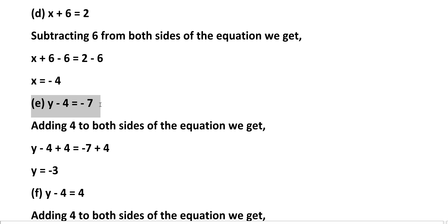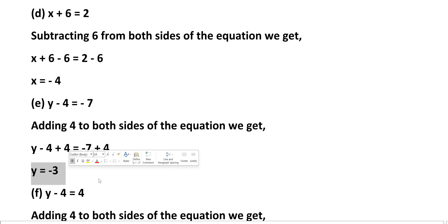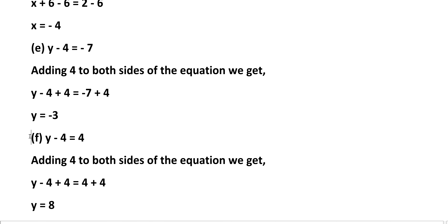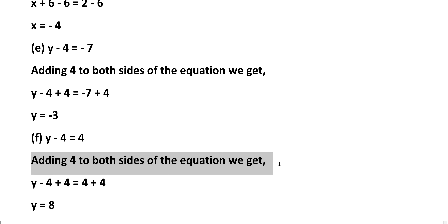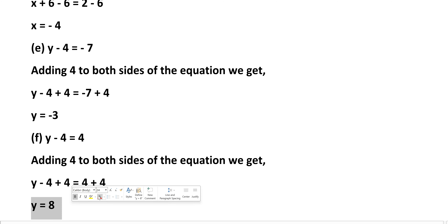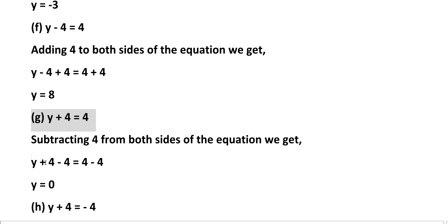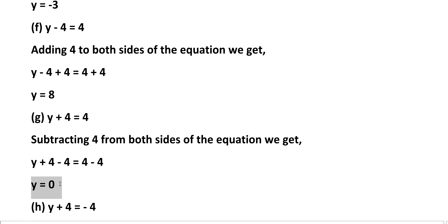E: y minus 4 equals minus 7. Adding 4 to both sides of the equation we get y minus 4 plus 4 equals minus 7 plus 4, that equals y is equal to minus 3. F: y minus 4 equals 4. Adding 4 to both sides: y minus 4 plus 4 equals 4 plus 4, that equals y is equal to 8. G: y plus 4 equals 4. Subtracting 4 from both sides: y plus 4 minus 4 equals 4 minus 4, that equals y is equal to 0.